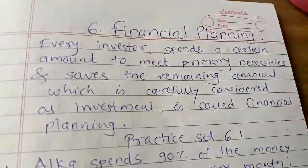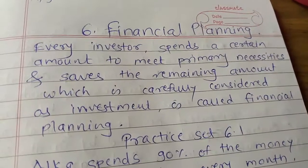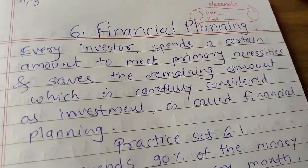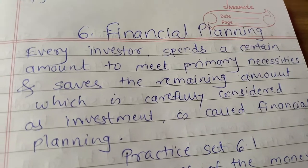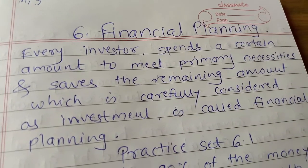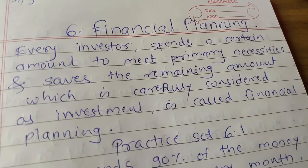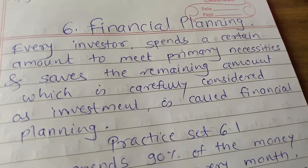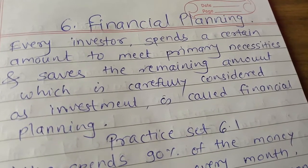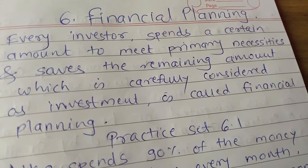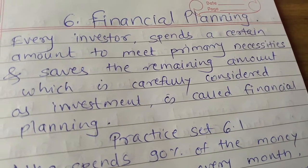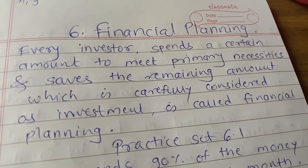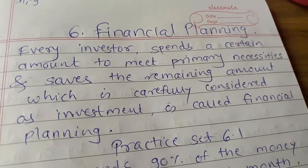Hello students. I am going to start with the new chapter from the 9th standard, that is financial planning. It is the 6th chapter. In the previous lecture we saw the linear equation in 2 variables. So today we are going to start with the new chapter, that is financial planning.